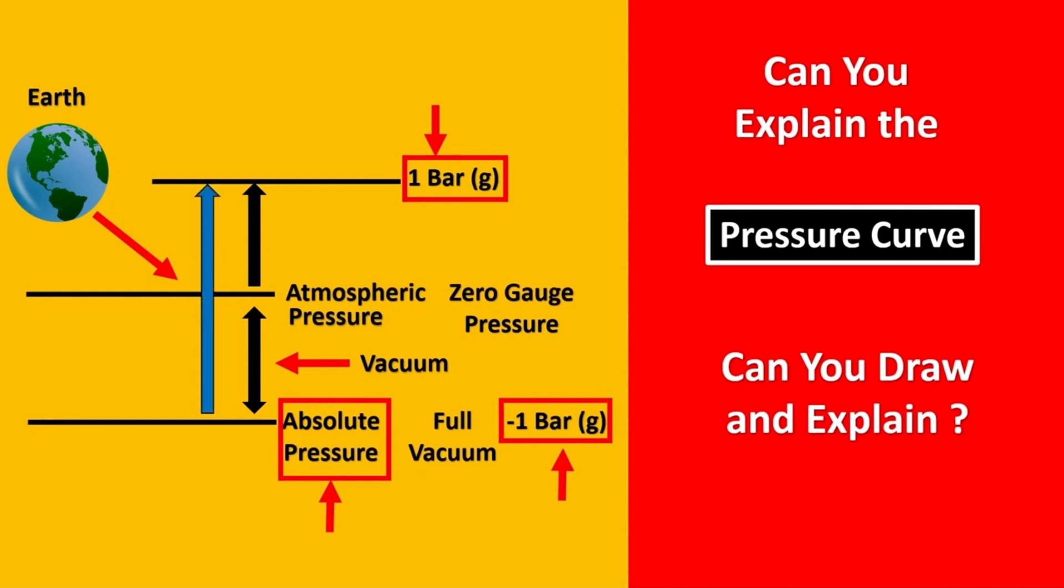Now if you're trying to measure the same pressure from absolute, you will get it as two bar absolute. If you compare and put them side by side, you'll realize that one bar gauge is basically two bar absolute.